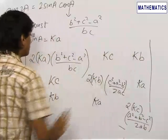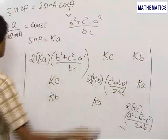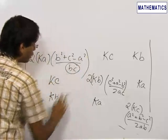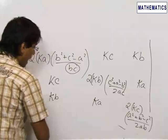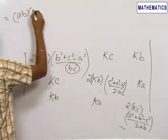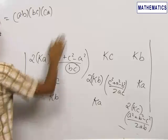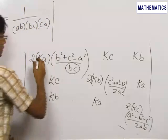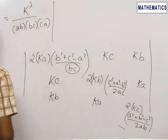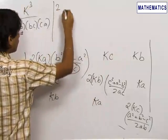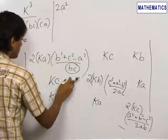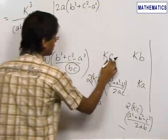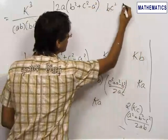Now we take k common from each row — giving k³ — and multiply the first row by BC, the second row by AC, and the third row by AB to clear the denominators. This places (ABC)² in the denominator. After multiplying, the first row becomes: 2A(B² + C² − A²), BC², B²C. The second row becomes: AC², 2B(C² + A² − B²), A²C.